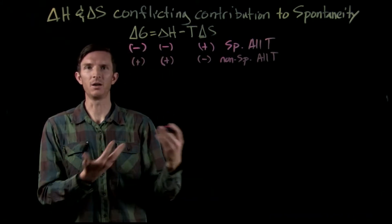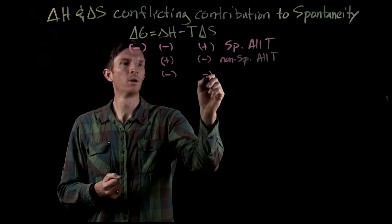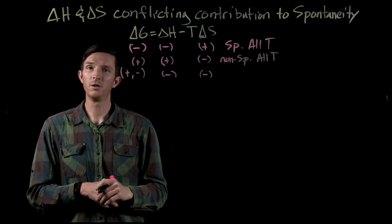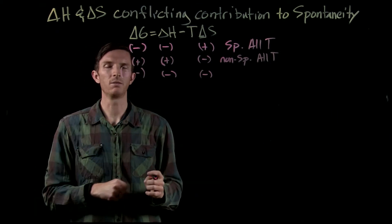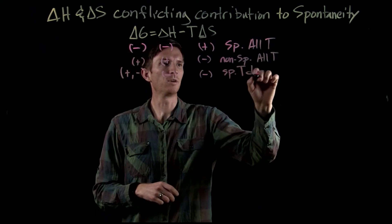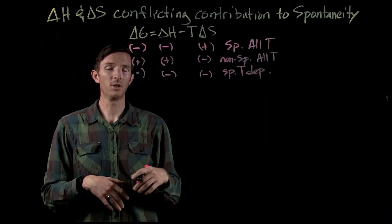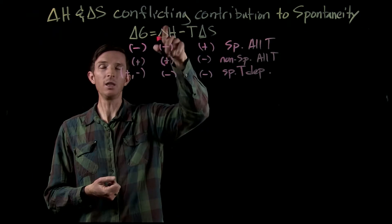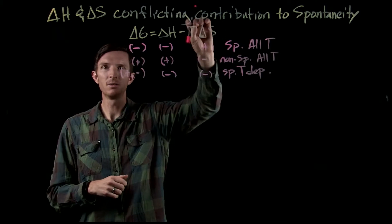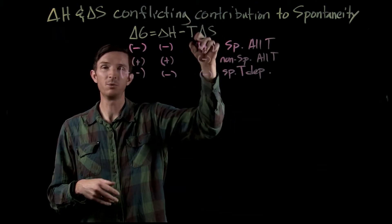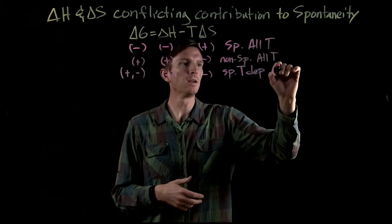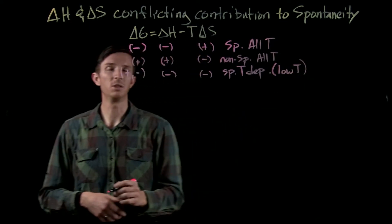Now, what if we have conflicting contributions? Like, let's say both our delta H and our delta S are negative. Well, that means that our delta G value could be positive or negative, and so the spontaneity is temperature dependent. At low temperatures, our enthalpy is the main contribution to spontaneity, but as temperature increases it makes the entropy contribution greater, and at some point it becomes non-spontaneous. So what we'll see is at low temperature it is spontaneous.